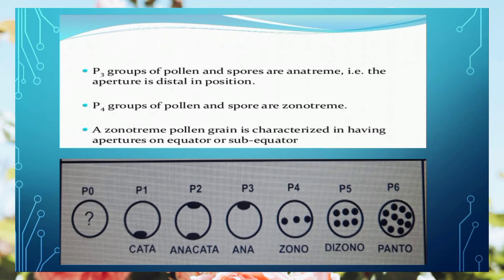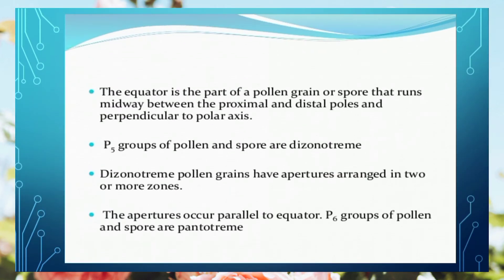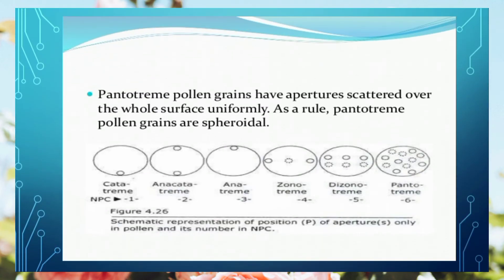For P5, looking at the diagram: parallel to the equator, two zones are formed above and below where apertures are located. In P5, numerous apertures are scattered on the surface of the pollen grain. In the diagram you can see: katadrome with one aperture on the proximal end, anacatadrome with proximal and distal apertures, and pantotreme with apertures uniformly scattered on the pollen grain.